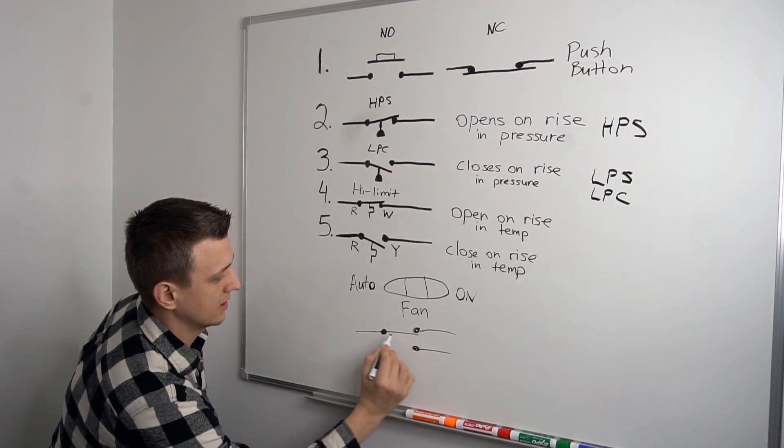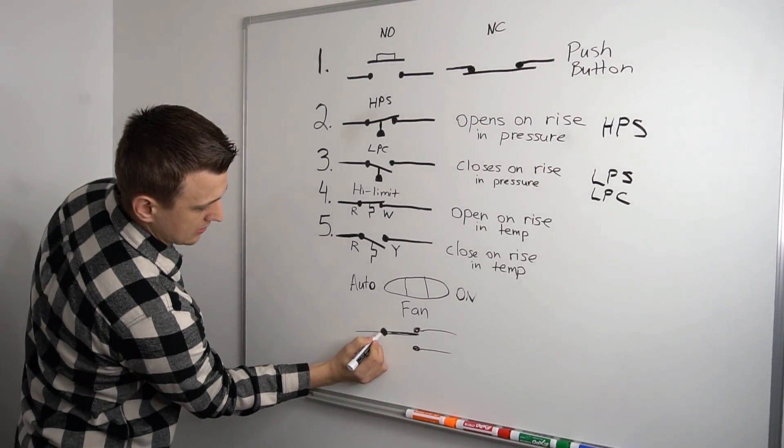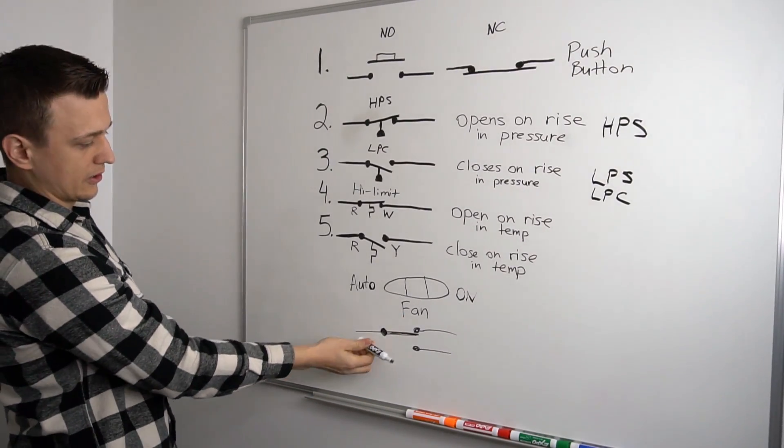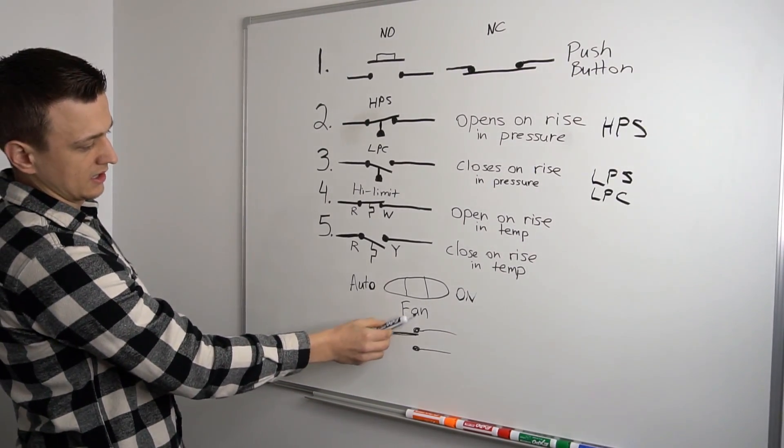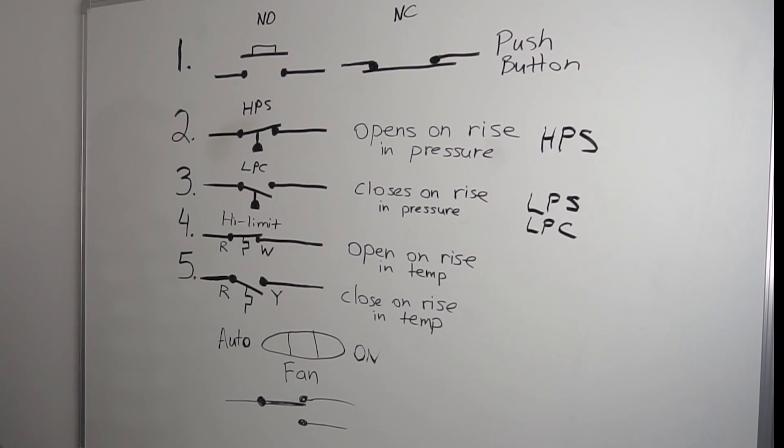So on most thermostats, this would be a two position switch. The switch is either in the auto position or the on position. So if you set it to auto, it's on this circuit. If you set it to on, the switch goes to this circuit. So it's pretty straightforward. And I think that's all I had to say about these switches.